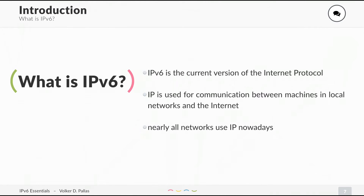What is IPv6? IPv6 is the current version of the internet protocol. You probably know IPv4 because you've been using it for 10 or more years, and IPv6 is just the next generation. IP is used for communication between machines in your local network and also on the internet, and nearly all networks use IP nowadays.